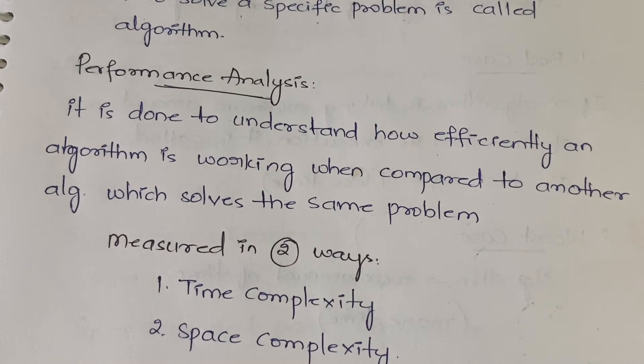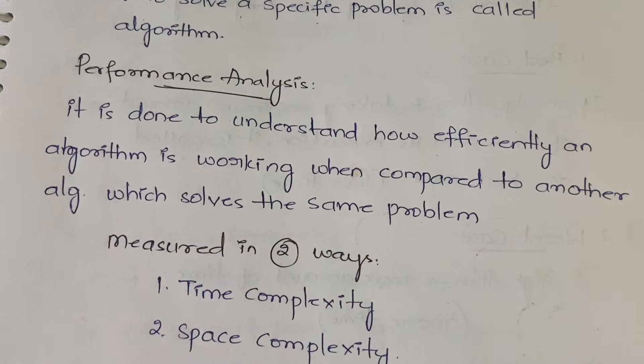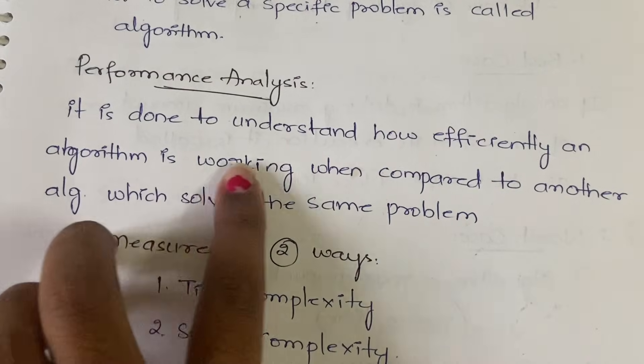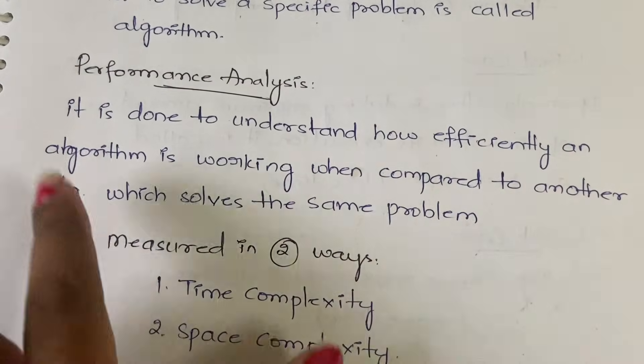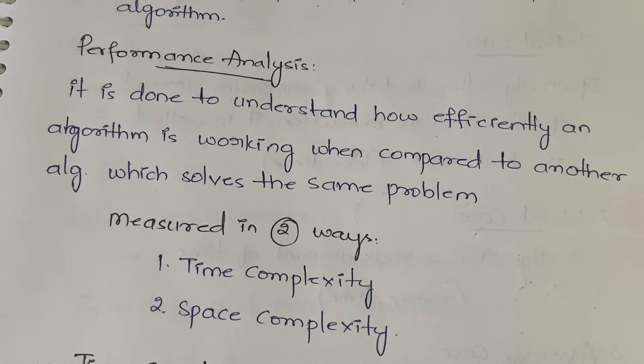For addition only you are having two algorithms. First algorithm you will get the same result, second algorithm also will give you the same result. Then among these two algorithms, which one you have to choose will depend on the efficiency of the algorithm. How efficiently an algorithm is working when compared to another algorithm which solves the same problem. And how do you measure that efficiency?